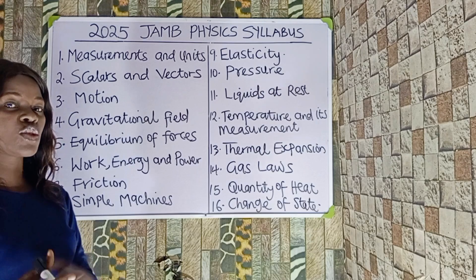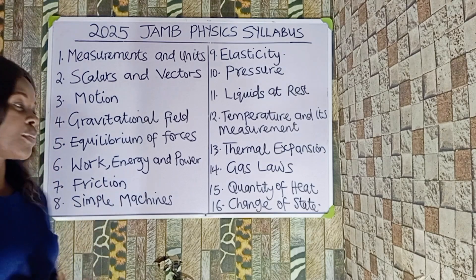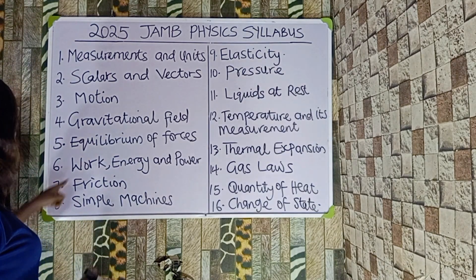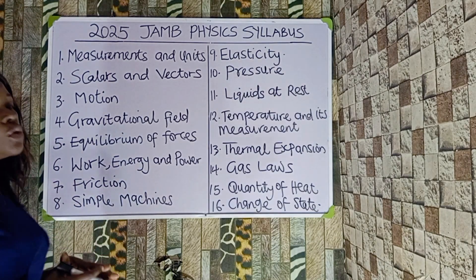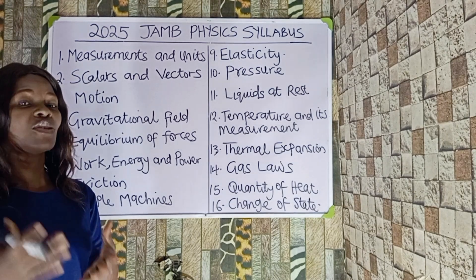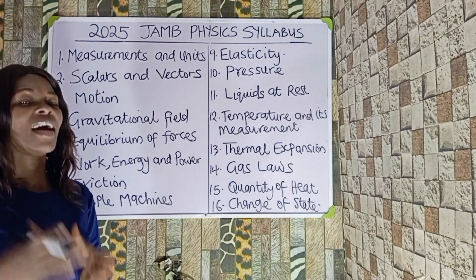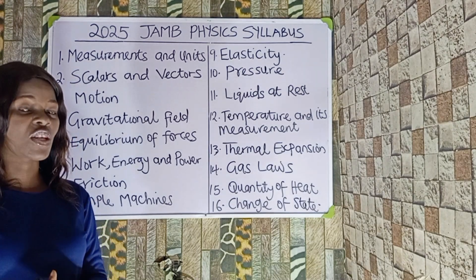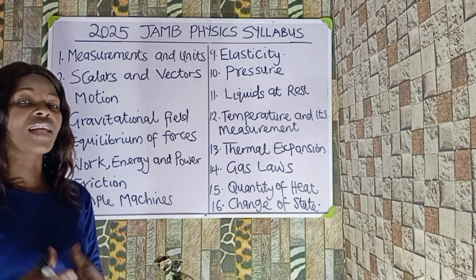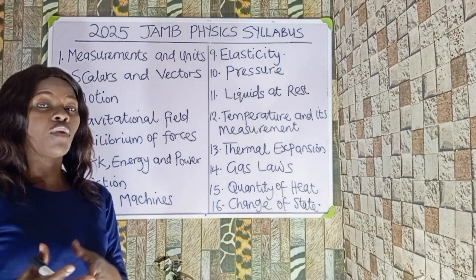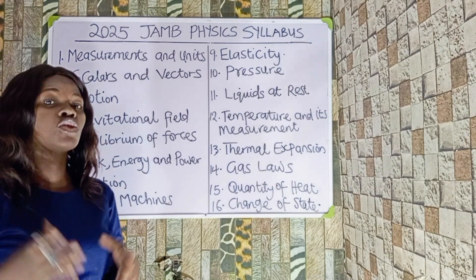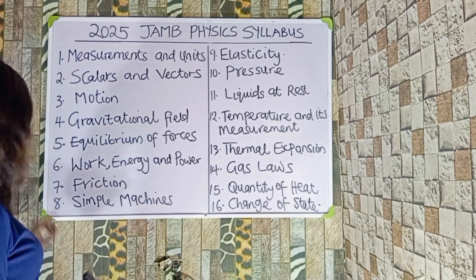Number seven is friction. We should know what are frictional forces, how we can reduce friction, the advantages and disadvantages of friction, and also the calculations involved in solving friction problems.